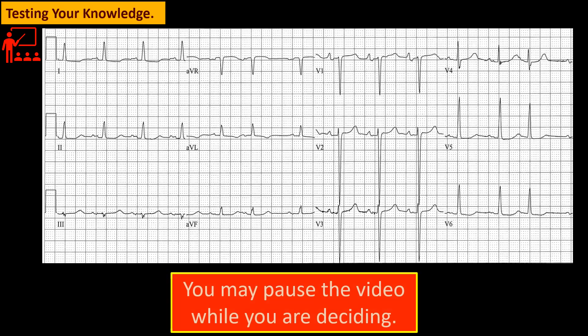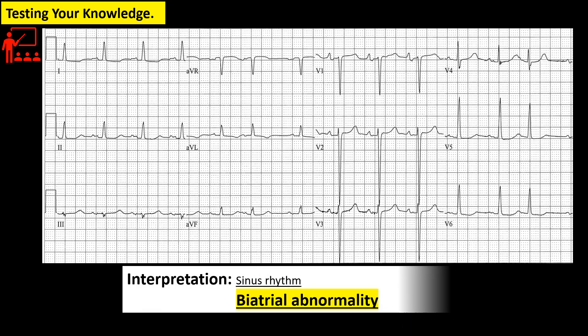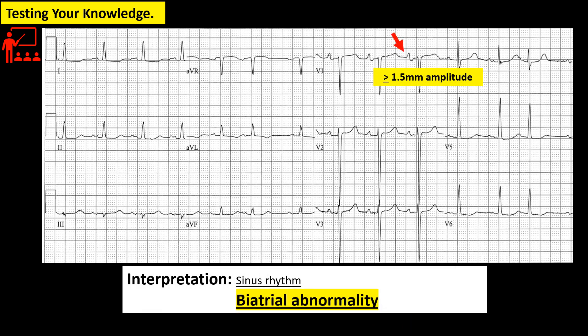How about this tracing? This is biatrial enlargement because it fulfills both the criteria for right atrial enlargement and left atrial enlargement.